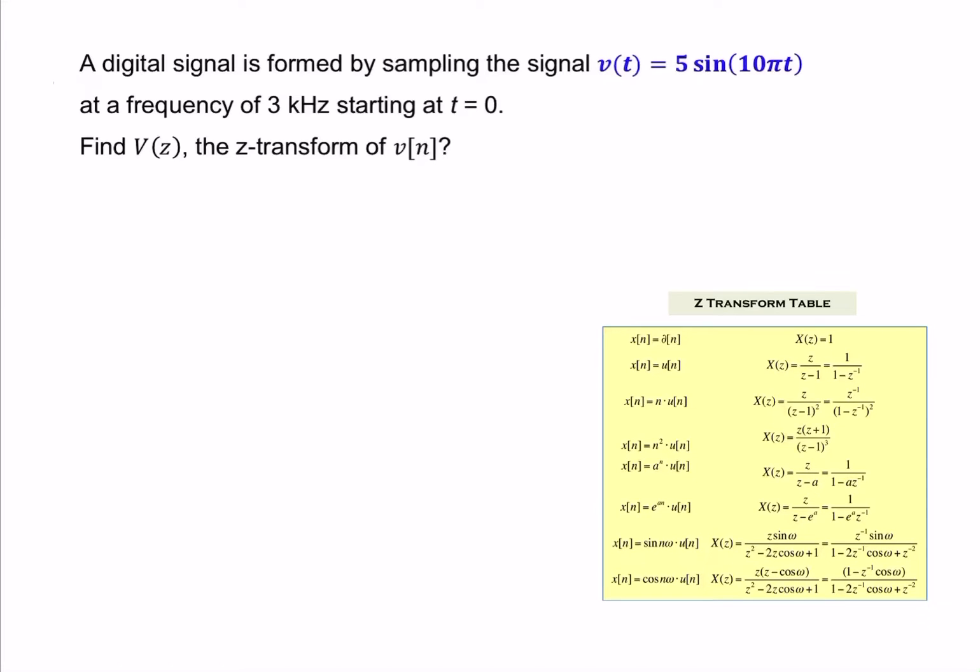In this question, we're given a continuous time signal v(t), and we're asked to find the discrete time version of this, v(n), after sampling, and from that find the z-transform, v(z).